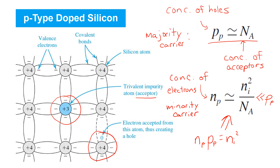I caution you that the simple notation can get confusing here, as there are obviously a lot of N's and P's. Take note of the subscripts and whether symbols are lower or uppercase, and remember the definition of each of those terms.